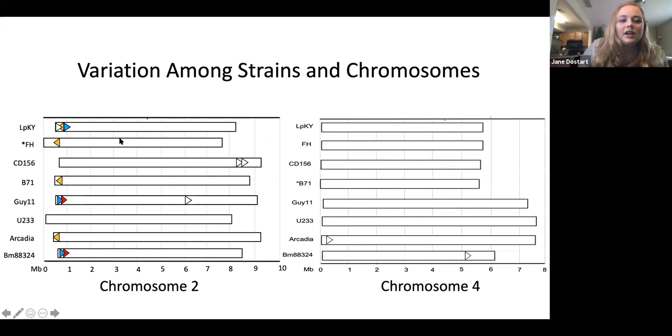And I found some interesting results. In chromosome two, if we look at the left side, I have all of chromosome two from just eight of the strains that I looked at. The color of the relic denotes which ones are matching. Those that are white are relics that were unique and had no match in other strains. And those that are the same color are shared. So interestingly, if we focus on the blue relic shared by LPKY, GE11, and BM88324, this one I thought was incredibly surprising because if I were to go back to that phylogeny we looked at, LPKY and GE11 are very distantly related to each other. So I would expect to see this blue relic showing up in other strains as well, such as FH, CD156, and B71, which are very more closely related to LPKY.